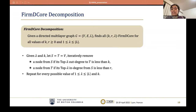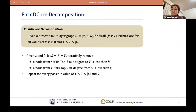The procedure for the directed firm d-core is very similar to firm core. Given lambda, we first set both S and T to V, then iteratively remove a node from S with top-lambda out-degree less than K, and remove a node from T with top-lambda in-degree less than R.